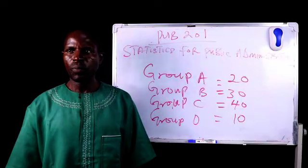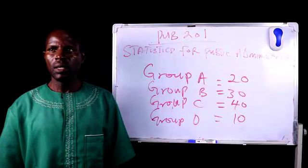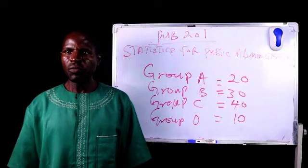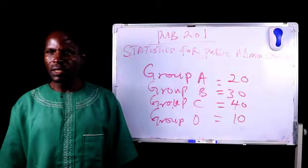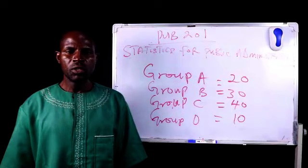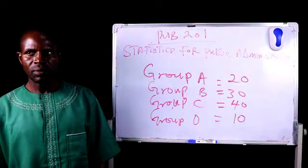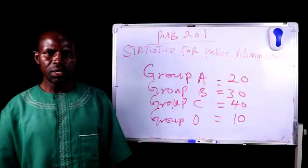Those are the procedures used in inferential statistics. Inferential statistics can be divided into two major groups: deductive statistics and inductive statistics. Deductive statistics has to do with reasoning from the general to the particular, whereas inductive statistics has to do with reasoning from the particular to the general.